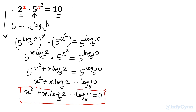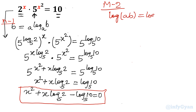Now let us take the second method. This was Method 1 using base conversion. For Method 2, I will use the log property that log(ab) can be written as log a plus log b. This is the alternative method. So let me take the log of the given equation.